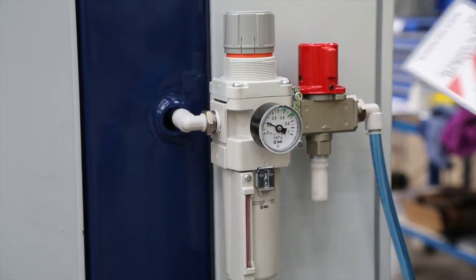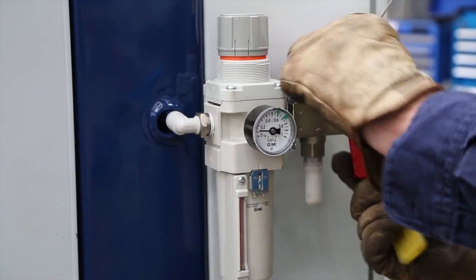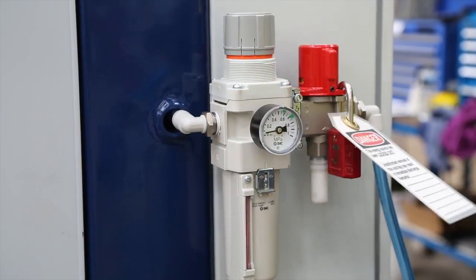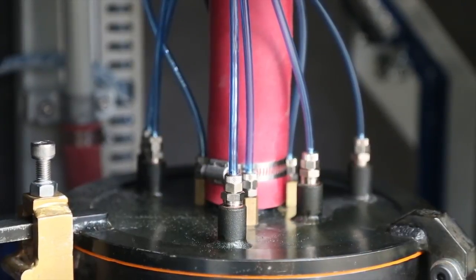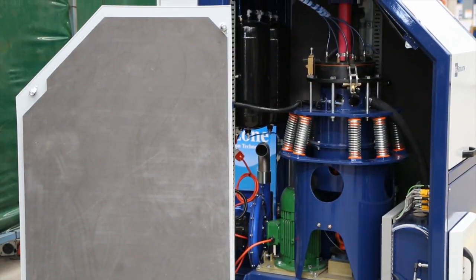A lockable shut-off valve on the air inlet isolates the machine from compressed air pressure during maintenance and residual air is dissipated once the mill is isolated. The mill enclosure incorporates acoustic lining to reduce noise exposure.